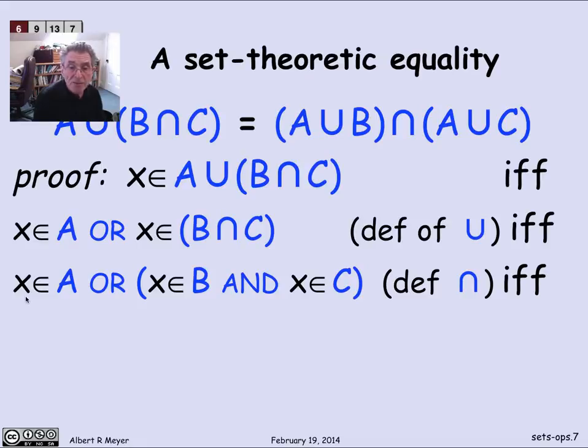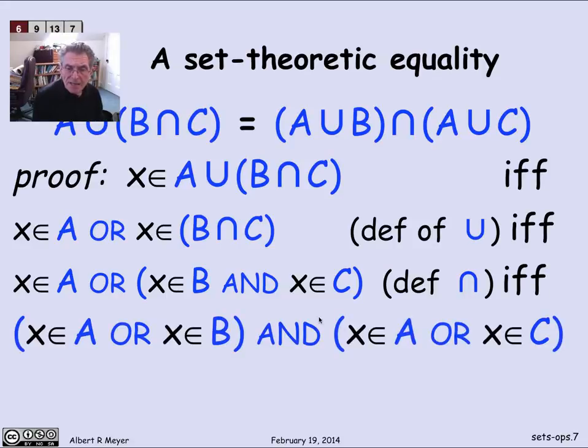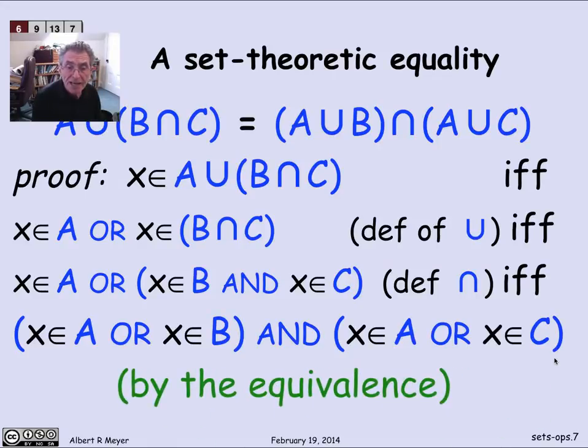And now I have a propositional formula involving OR and AND with the basic assertions about sets, that x is a member of one of those A, B's, and C's. Now at this point I can immediately apply my propositional equivalence and say that the assertion x is in A or (x is in B and x is in C) holds if and only if (x is in A or x is in B) and (x is in A or x is in C). Why is that? Well, I'm just invoking the propositional equivalence. Let's look at it.